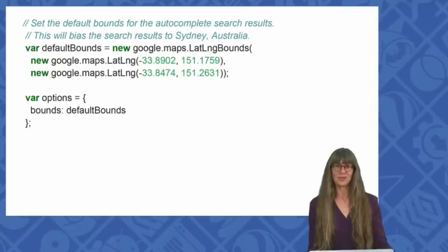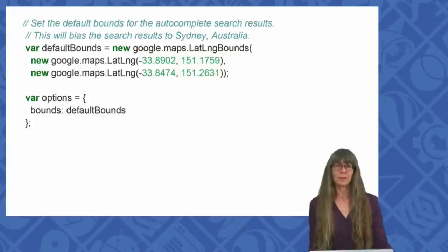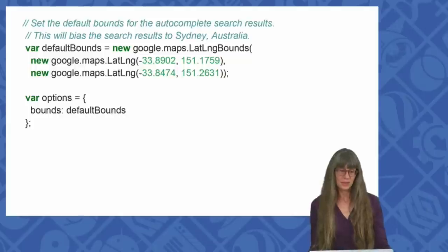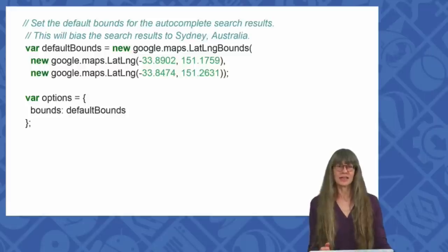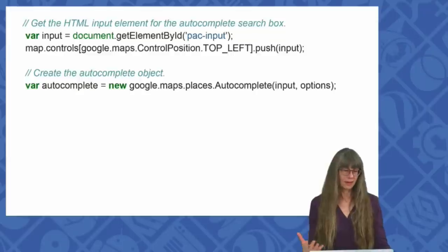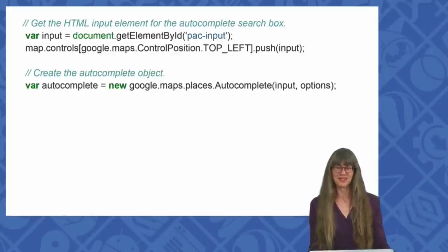I've decided to use a default area for the search conducted by autocomplete. To define the area, I've created a lat-long bounds object. It defines a rectangle on the Earth by setting the latitude and longitude for the southwest corner and for the northeast corner of the rectangle. The autocomplete will bias its search to this area, but not restrict the results to that area. I've decided to bias my search results to an area in Sydney, Australia. I've also created a variable, which I've called options, that contains the bounds object. Now, we hook up the HTML input element as a variable, and add some magic to push the autocomplete widget onto the map canvas. And finally, create the autocomplete object, passing it the input element and the options object.